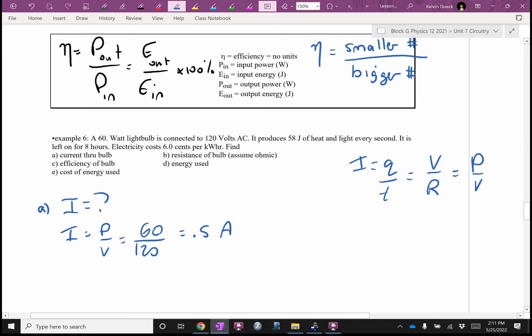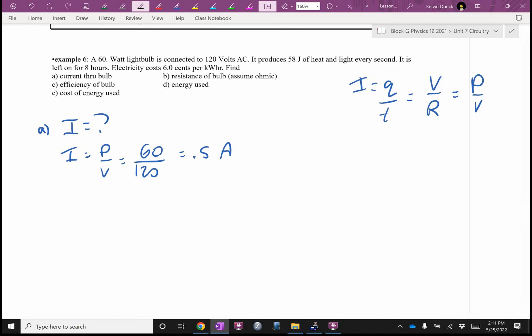Part B: find the resistance. Using Ohm's law, R equals V over I. They gave us 120 volts and we just found 0.5 amps. So 120 divided by 0.5 equals 240 ohms.